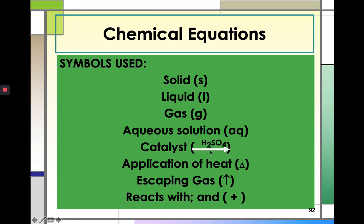For catalysts, these are substances that speed up the reaction. For example, it's H2SO4. They are usually written on top of the arrow, which represents the form. And then application of heat is given by this triangle, delta. And then if you see the plus sign, that means it reacts with.